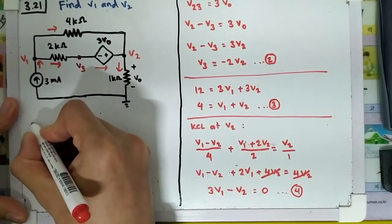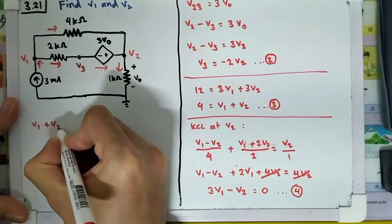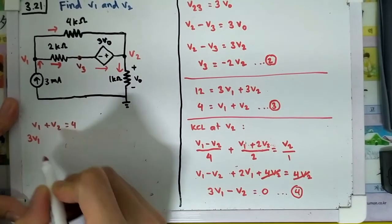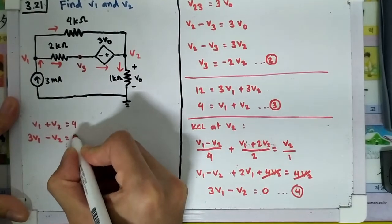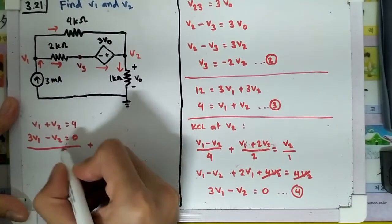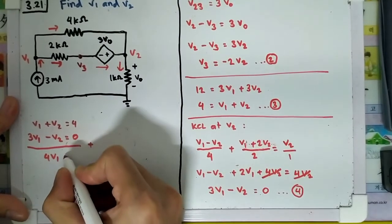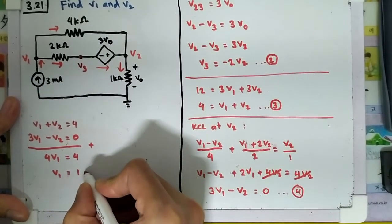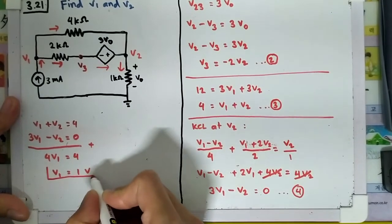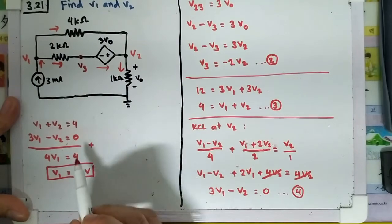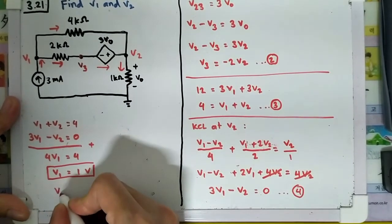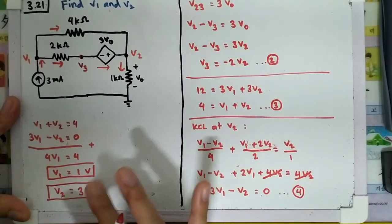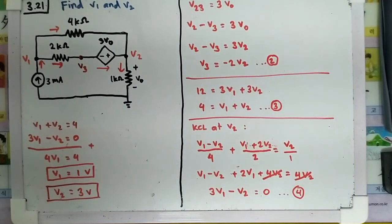Looking at Equation 3: v1 plus v2 equals 4, and Equation 4: 3v1 minus v2 equals 0. Adding these two equations gives 4v1 equals 4, so v1 equals 1. Plugging back in, v1 plus v2 equals 4, so v2 equals 3. These are our final answers. Let me know if you find any mistakes, and thanks for watching.